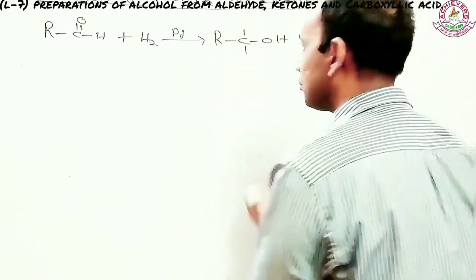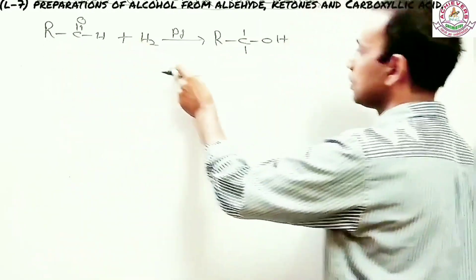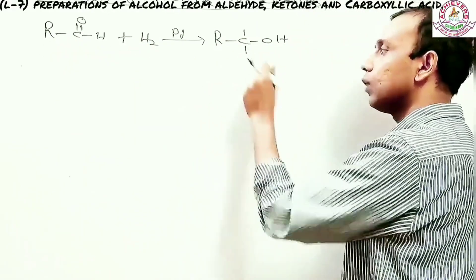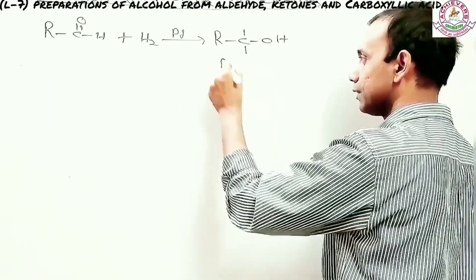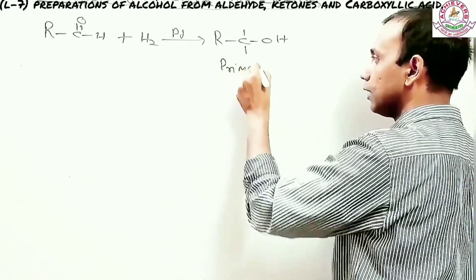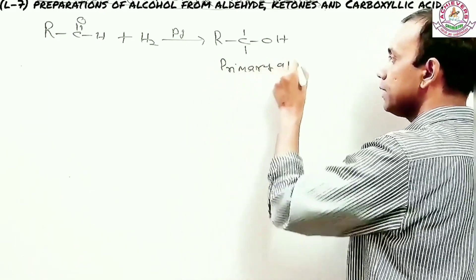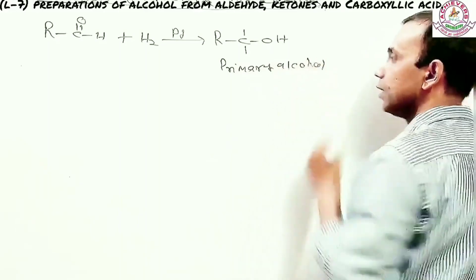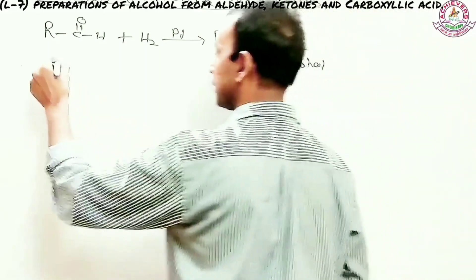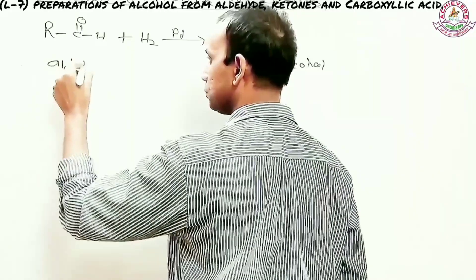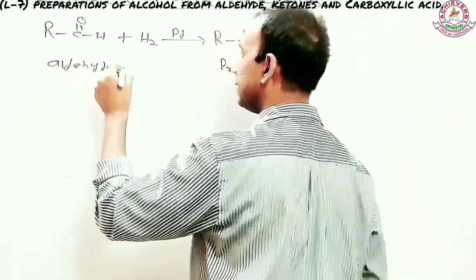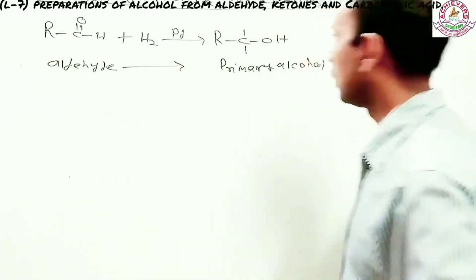What is important? When you have aldehyde to reduce, then your alcohol is primary alcohol. What is primary alcohol? Aldehyde is the conversion to primary alcohol.